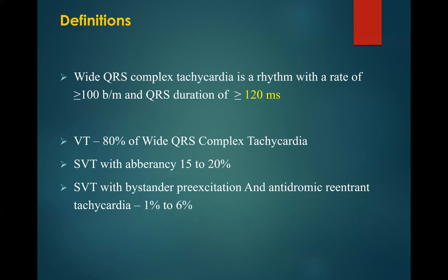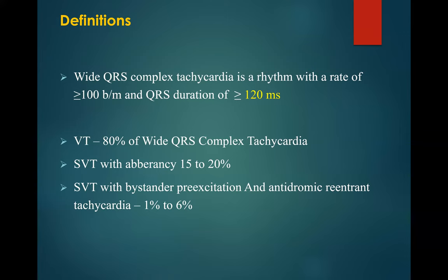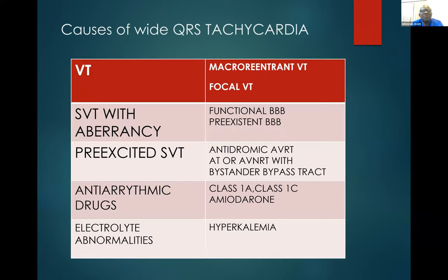By way of definition, wide QRS complex tachycardia is a rhythm with a rate of at least 100 beats per minute and a QRS duration of above 120 milliseconds. Ventricular tachycardia occurs in about 80% of wide complex tachycardia, while supraventricular tachycardia with aberrancy takes about 15 to 20%, and supraventricular tachycardia with bystander pre-excitation and antidromic re-entrant tachycardia accounts for about 1 to 6%.